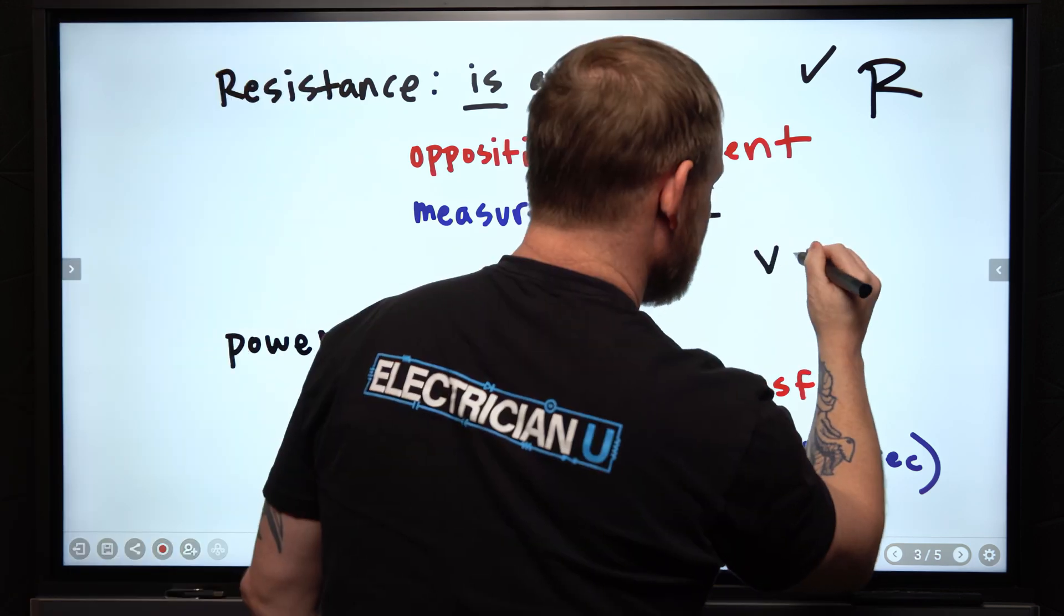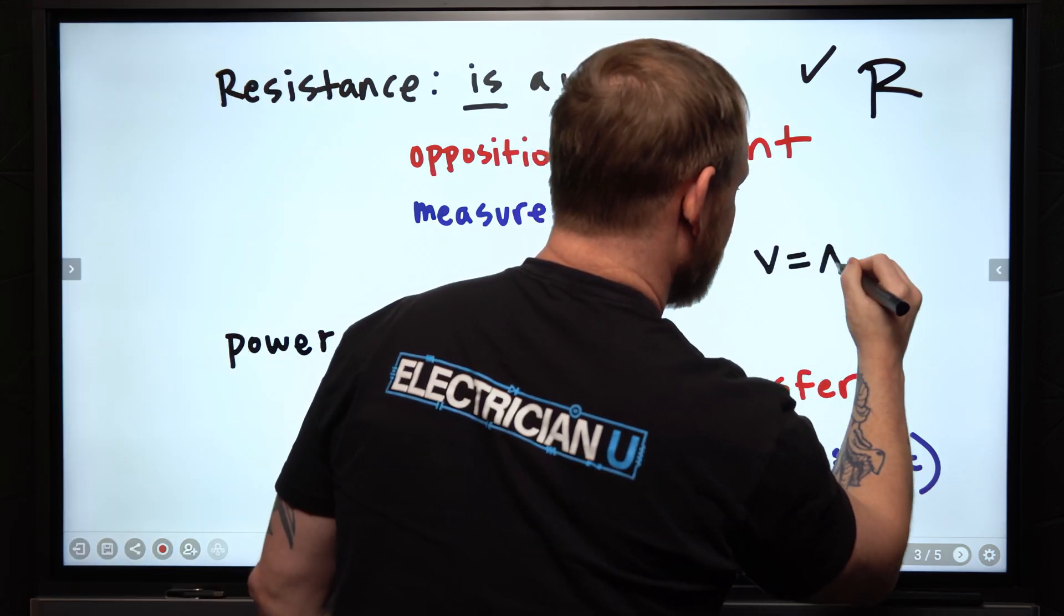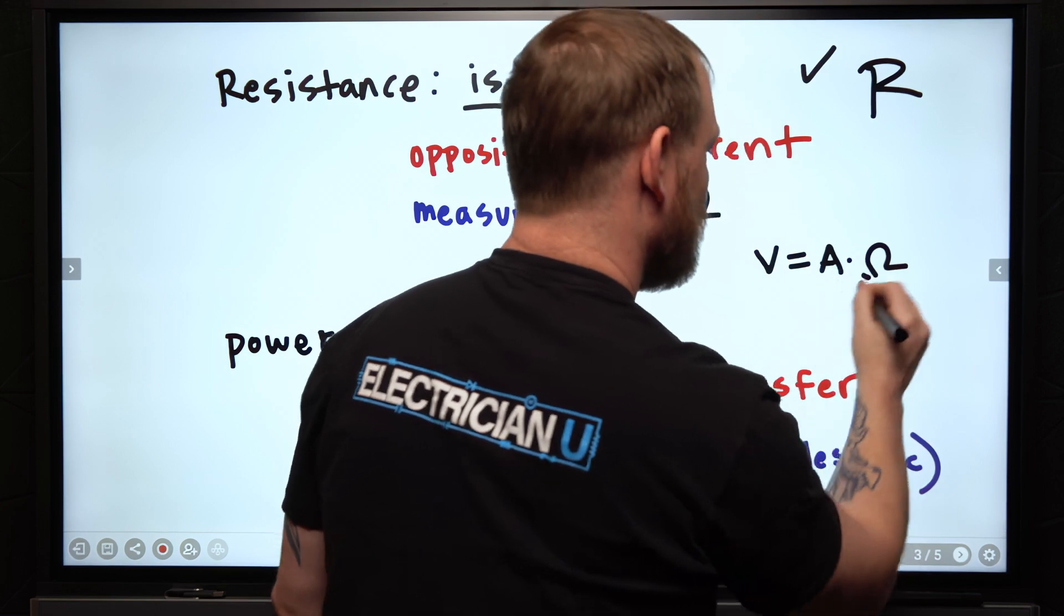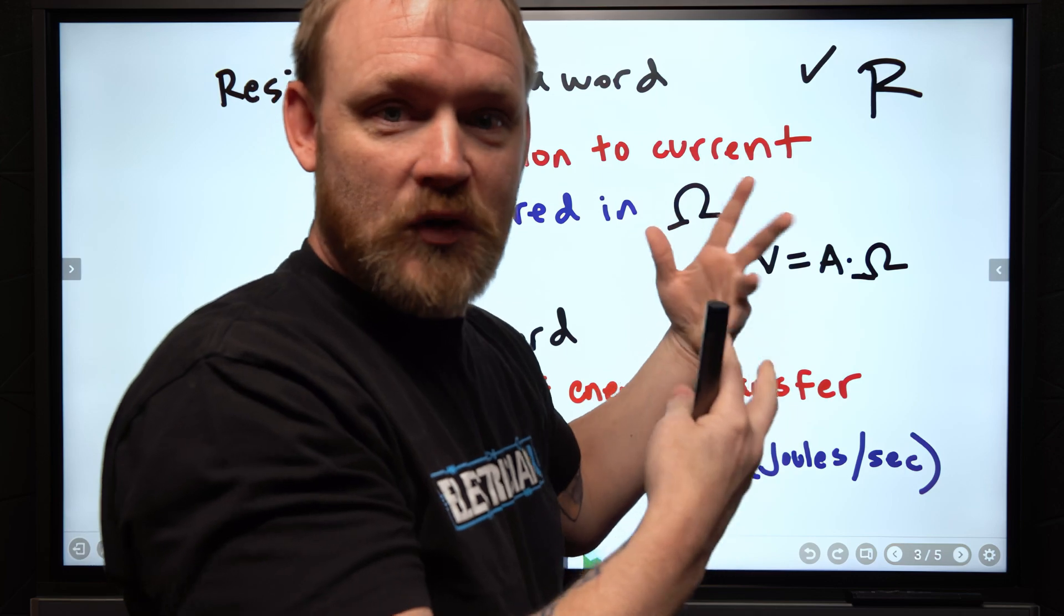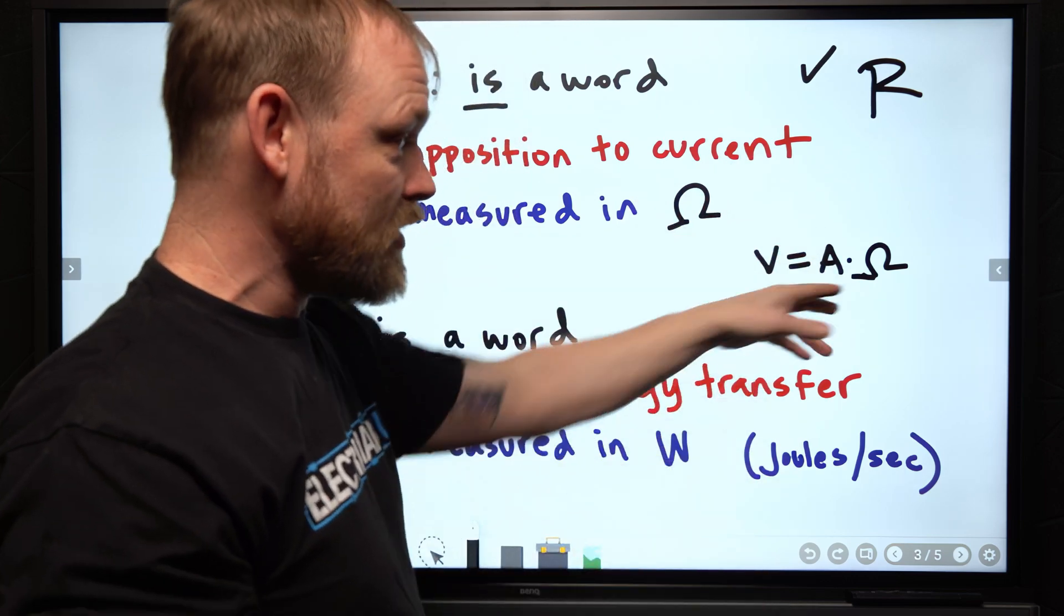We don't say V equals A times ohm. That's the right way to do it. If you're going to do this, if you're going to go against actual logic and use V and A, then you need to use ohm.